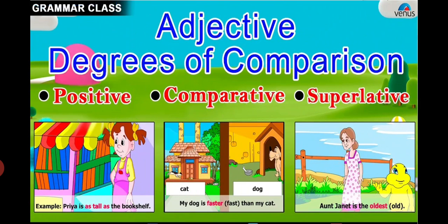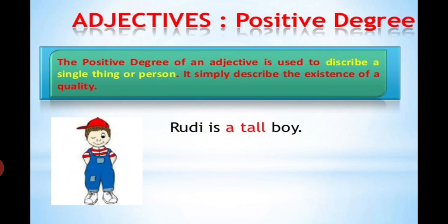So how do they do it? Positive, comparative and superlative degree. Here are three types of degrees: positive, comparative and superlative. First of all, positive degree. A positive degree of an adjective is used to describe a single thing or a person. It simply describes the existence of a quality. Like Rudy is a tall boy. What is his quality? He is tall.